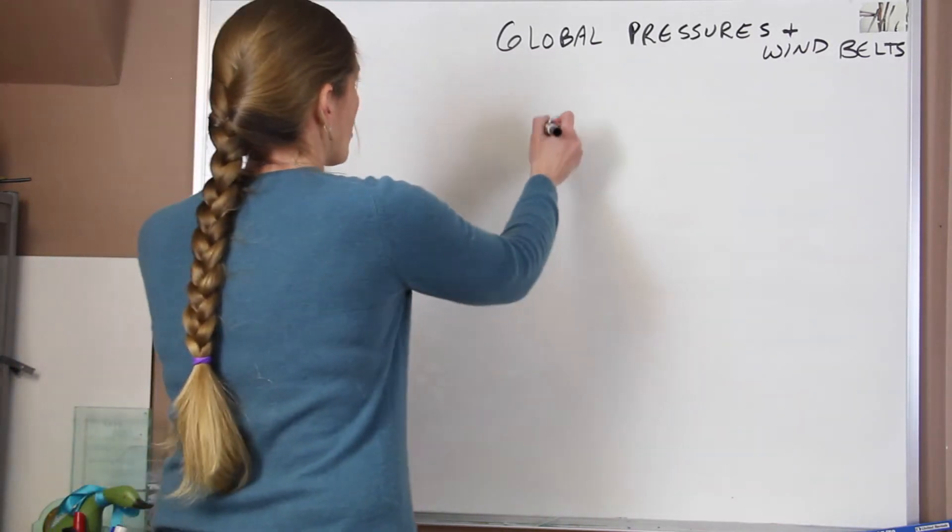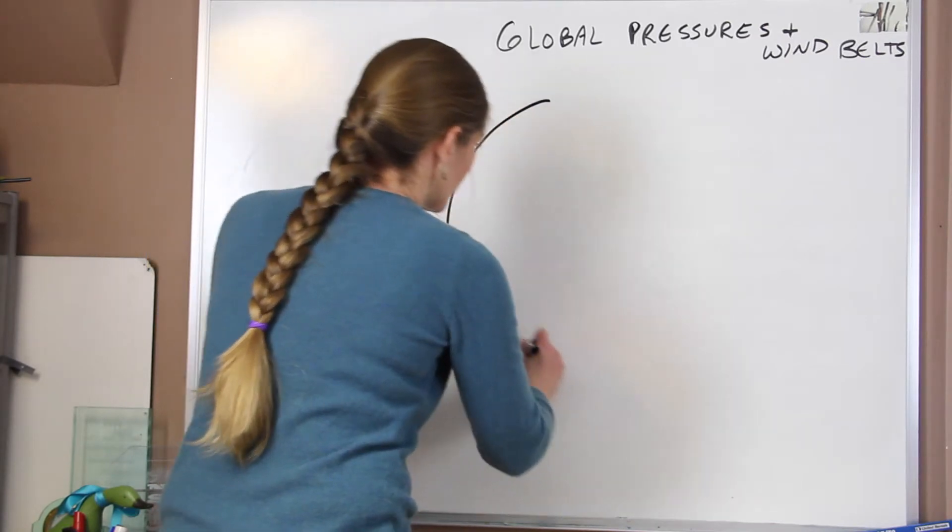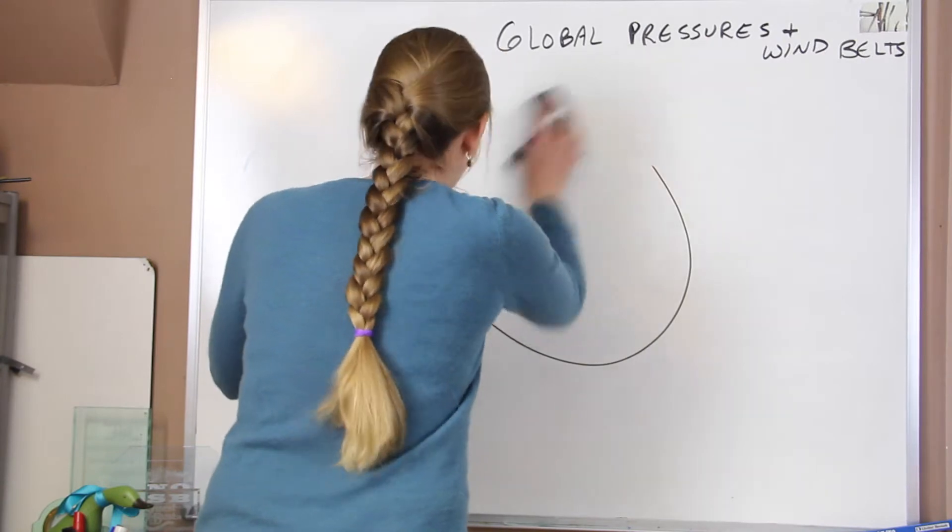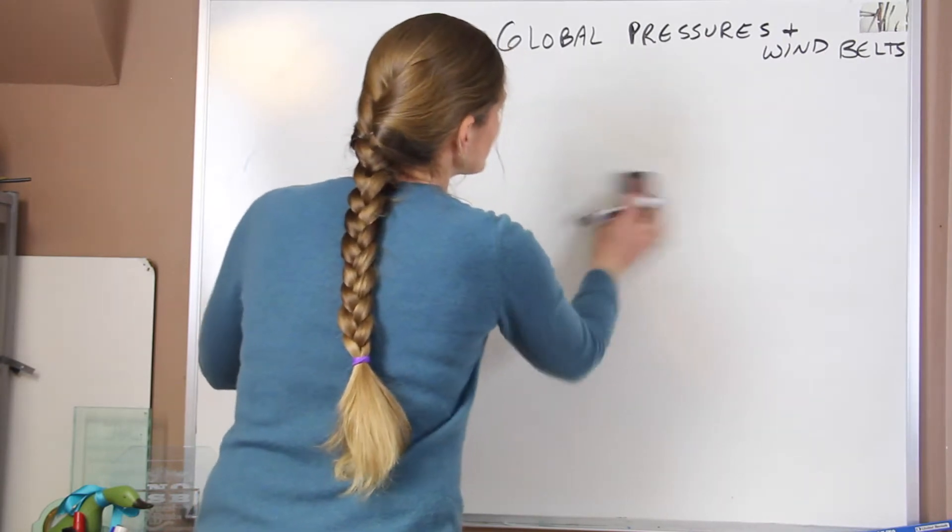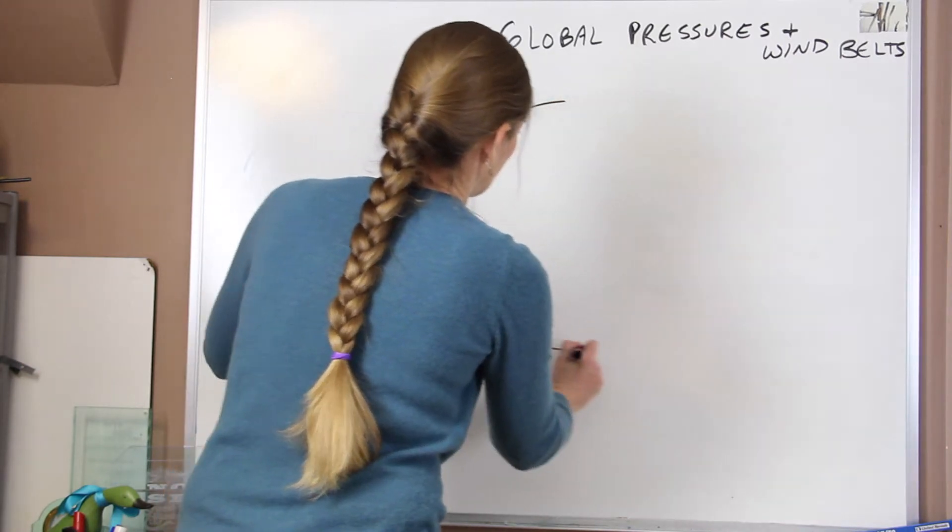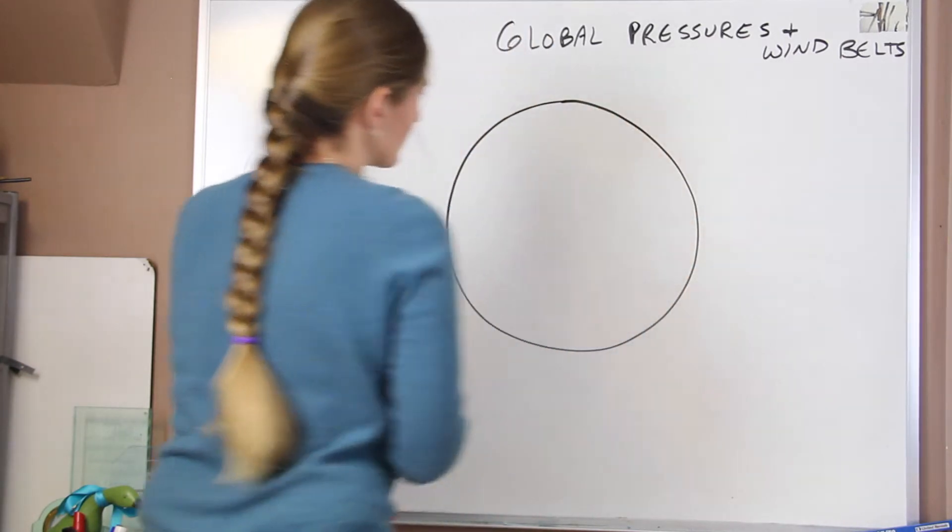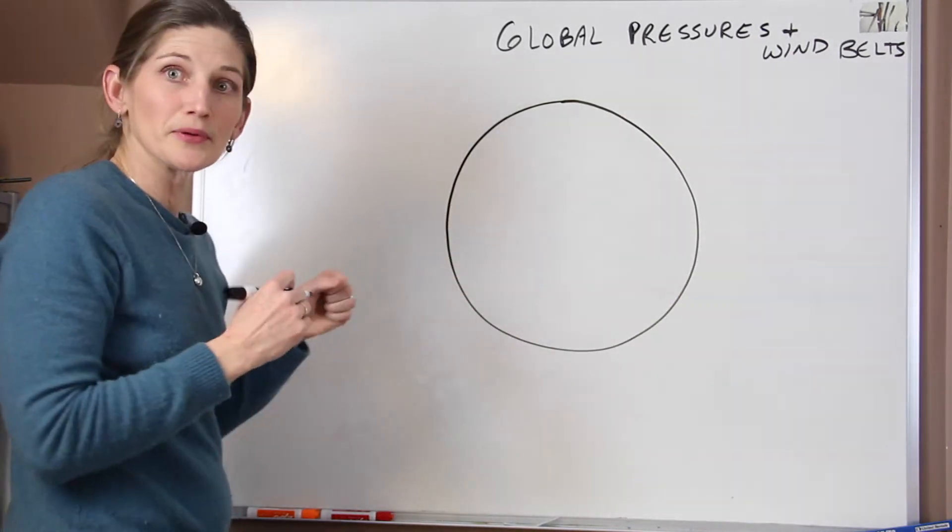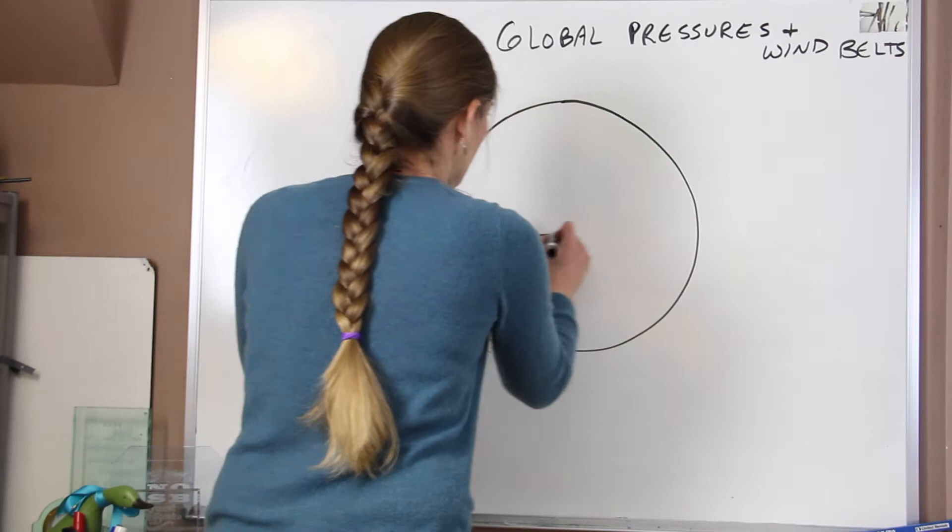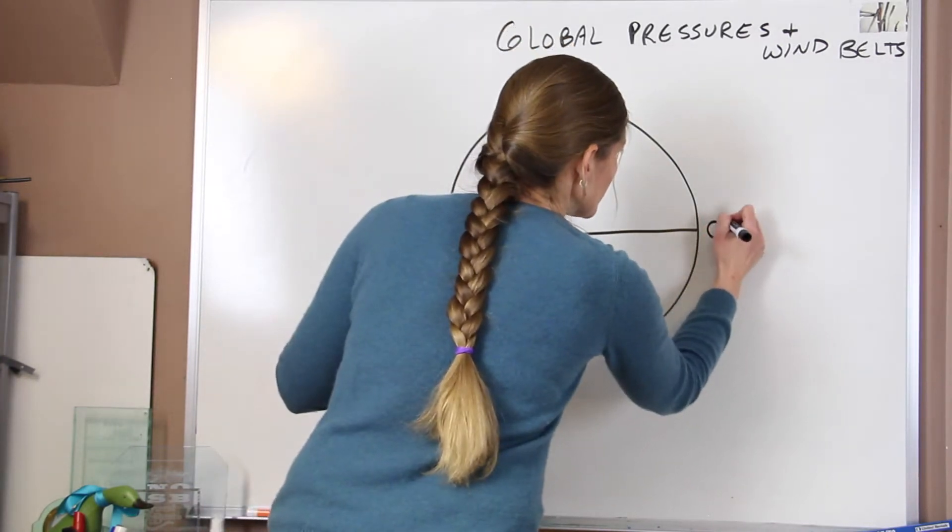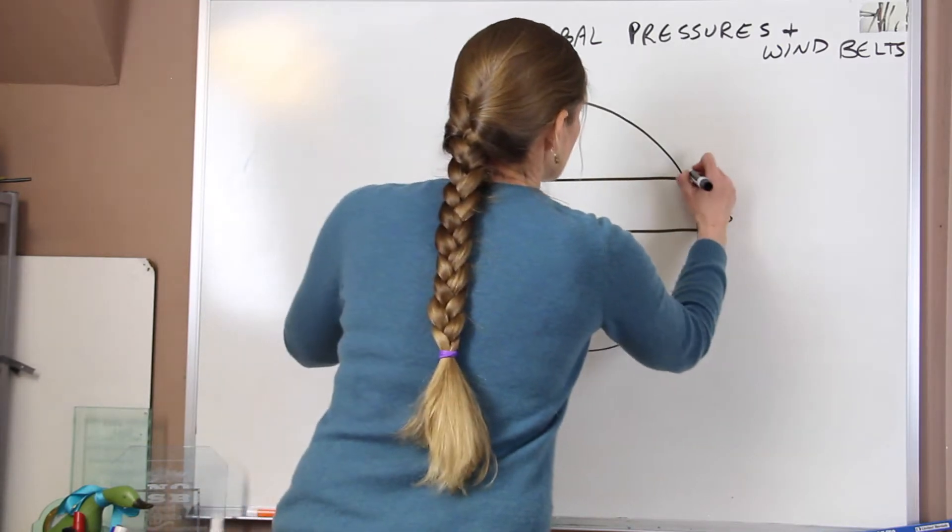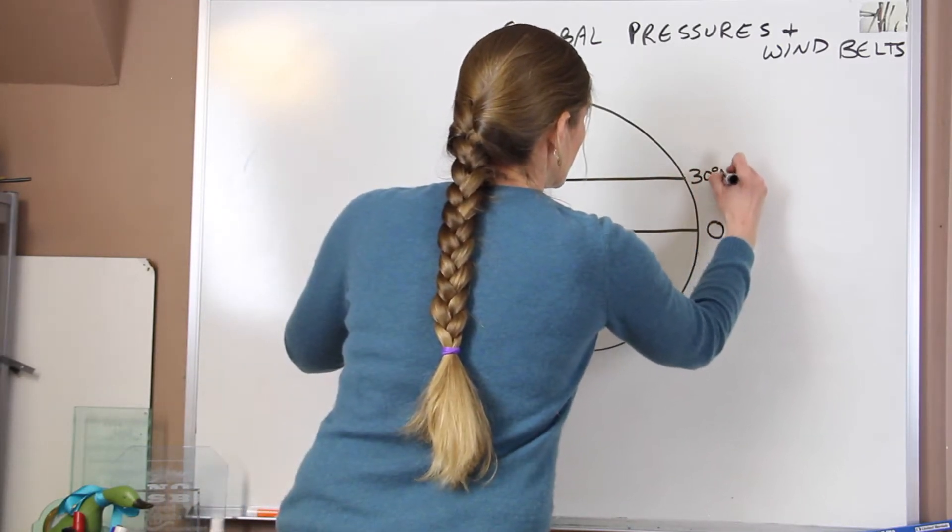So I'm going to just start out by drawing our Earth. So we have our Earth and I'm going to put some belts around it, our lines of latitude to keep track of everything. First, we have the equator, which is zero degrees. Then we're going to go a third of the way up. This is 30 degrees north latitude.